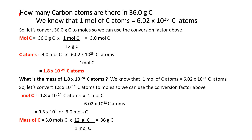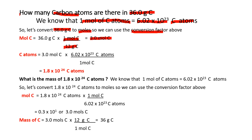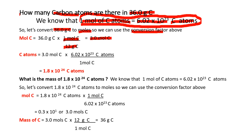Let us have an example problem. How many carbon atoms are there in 36 grams of carbon? We know that 1 mole of carbon atoms is equal to 6.02 times 10 to the 23rd carbon atoms. First, let's convert 36 grams of carbon to moles using the molar mass of carbon: 1 mole of carbon is 12 grams of carbon. Using this conversion factor, we can calculate the number of moles of 36 grams of carbon, which gives us 3 moles. Now we can use the conversion factor that 1 mole of carbon atoms is 6.02 times 10 to the 23rd, because we now know the number of moles.